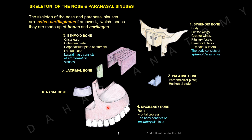The fifth bone is the lacrimal bone — a very small flat bone in front of the ethmoid bone. And in front of the frontal process of the maxilla is another bone: the nasal bone.